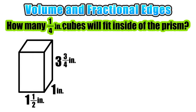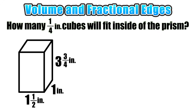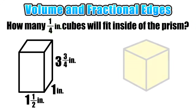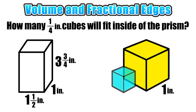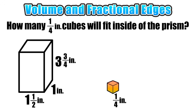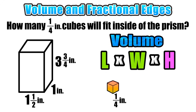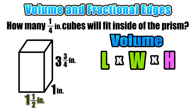Now let's take on one final example where we want to find how many one-quarter inch cubes will fit inside of the prism shown. Notice that this prism has what's called fractional edges — meaning the dimensions of the length, width, and height are mixed numbers that include fractions. Our unit cubes are one-fourth, or one-quarter, of an inch in size. We can imagine a one-inch cube, a one-half inch cube, and a very small one-quarter inch cube. Our volume will be represented by a much larger number than if we had used a one-inch cube.